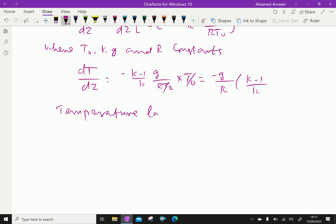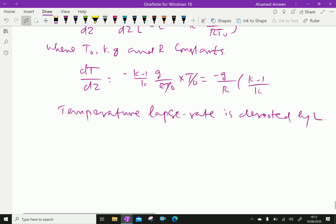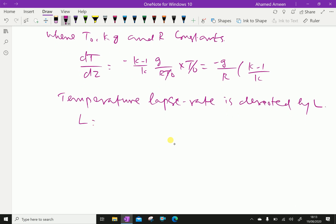lapse rate is denoted by L. Therefore, you can write L equal dT by dZ. Temperature changes with respect to altitude, dZ equal minus G over R k minus 1 over k. Here, this is the equation.